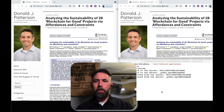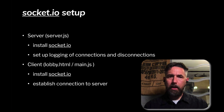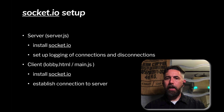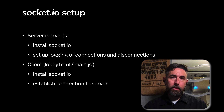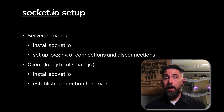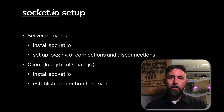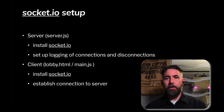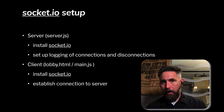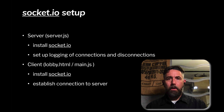To summarize: we set up socket.io end-to-end. On the server side, we installed socket.io and wrote code to log connections and disconnections. On the client side, we added the socket.io SRI hash script tag to lobby.html and added the few lines needed in main.js to establish a connection from the browser to the server. Thank you very much for your attention.